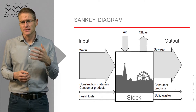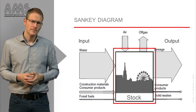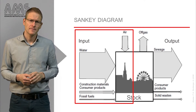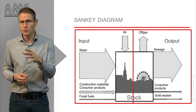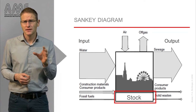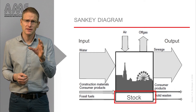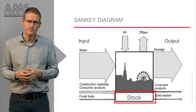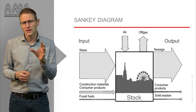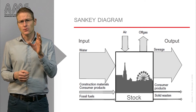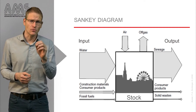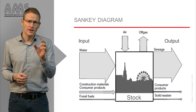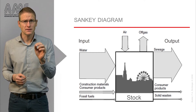This type of diagram has a number of key features. It has a defined system boundary — in this case your city. It has input and output flows, and it has stocks that accumulate in the city. Stocks accumulate when input flows exceed output flows. The other important aspect of this diagram is that the width of the arrows represents the relative weight of the flows going into a city, enabling us to compare different flows.